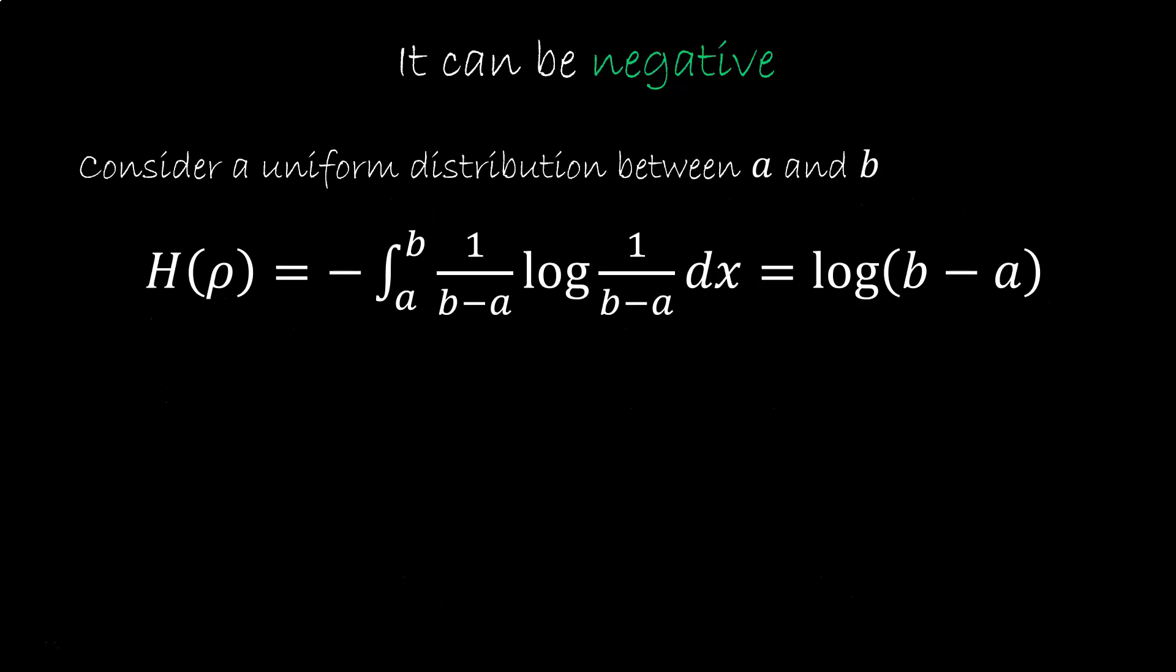To see that it can be negative, consider a uniform distribution between two values a and b. If you calculate the entropy, you get log b minus a. If you have a unit interval, then b minus a is one, so h is zero. The variability is the same as the one of a unit interval. Zero bits of information are needed. If you have double the unit interval, and we assume log is in base two, you have entropy of one. The variability is greater.